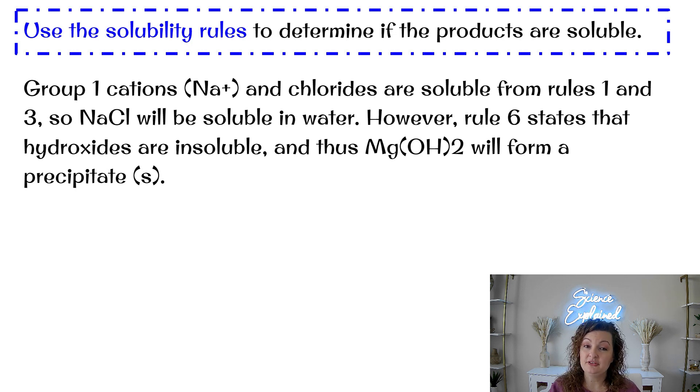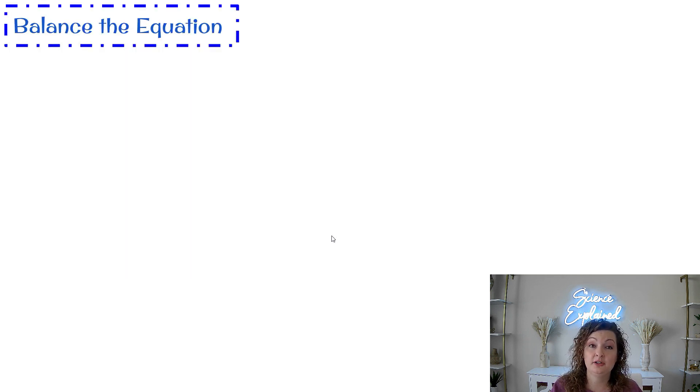So group one cations Na+ and chlorides are soluble from rule one and rule three. So NaCl will be soluble in water. However, rule six states that hydroxides are insoluble and thus the Mg(OH)2 will form a precipitant. And remember, precipitants are going to be classified as the S inside the parentheses instead of that AQ, which we know is aqueous.